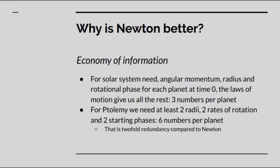For the Ptolemaic system we need at least two radii, the radii of the main circle and the epicycle. We need two rates of rotation, the rate of rotation of the major and minor circle, and two starting phases. So that's six numbers per planet. So compared to the Newtonian theory, the epicycle theory has a two-fold redundancy.